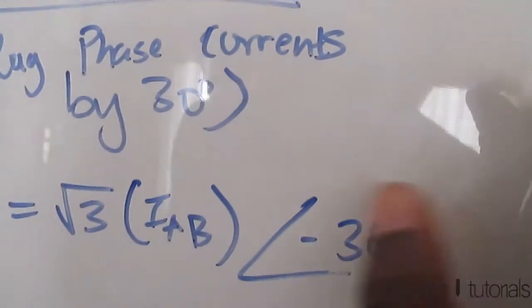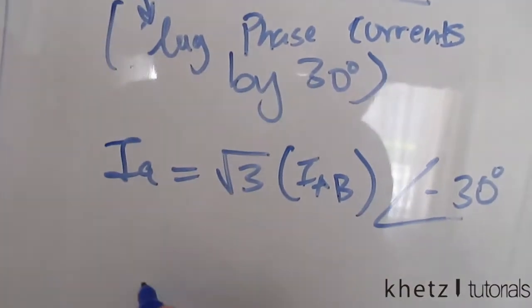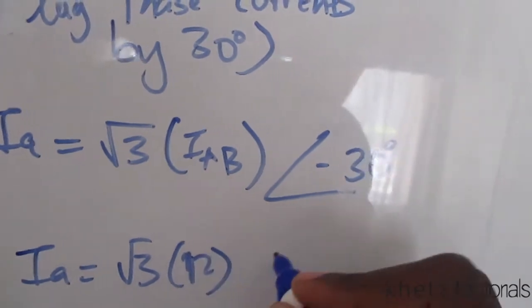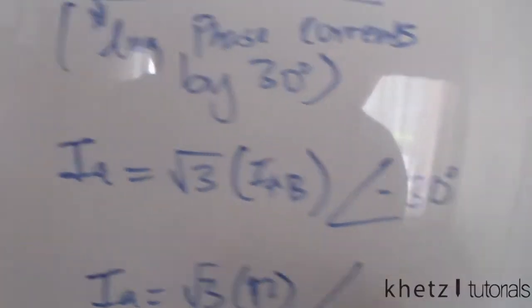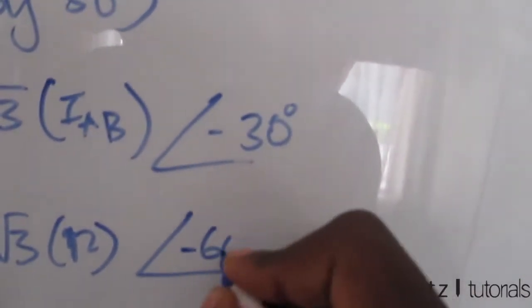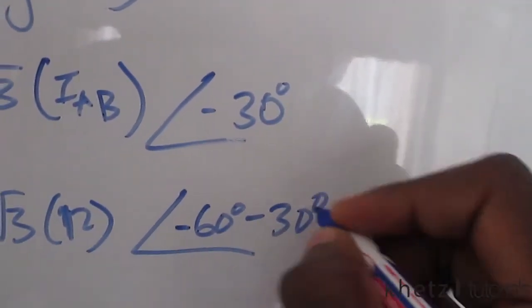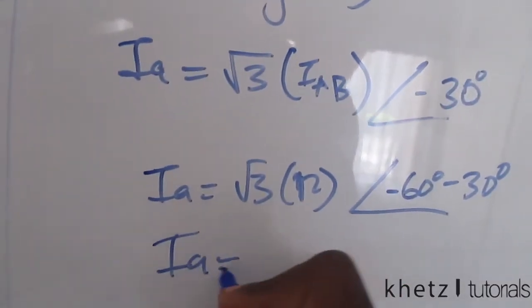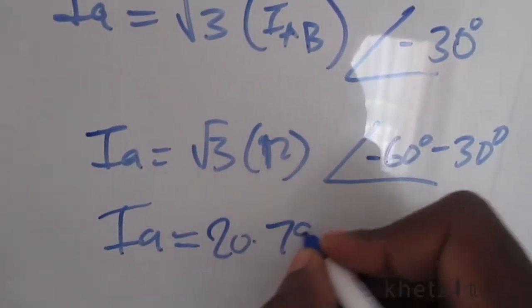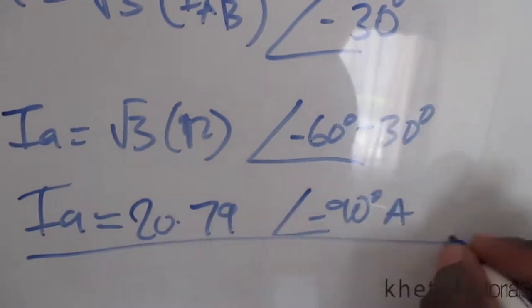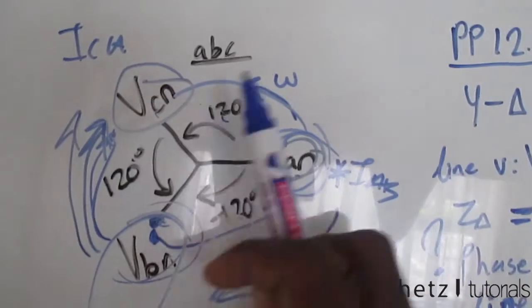For our phase current IAB we have a magnitude of 12 and an angle of negative 60 degrees. We multiply 12 by the square root of 3 and subtract 30 degrees from negative 60 degrees. The final value of IA is 20.79 at an angle of negative 90 degrees, in amperes.